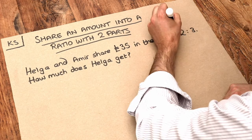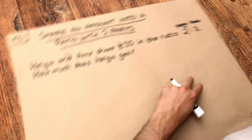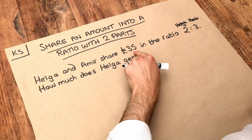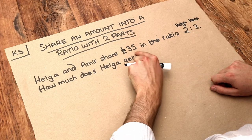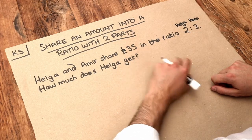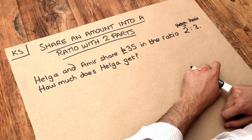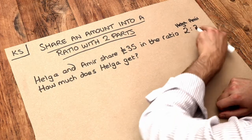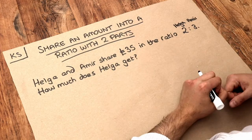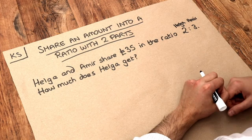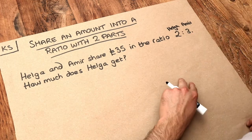So let's actually write Helga and Amir on here. What we do with the £35 is think: what is that in the ratio? Is the £35 the amount of parts that Helga gets, or the amount of parts that Amir gets, or is it the total amount that both get? Well, the £35 is the total amount of money that's been shared, and therefore we use the total number of parts in the ratio.